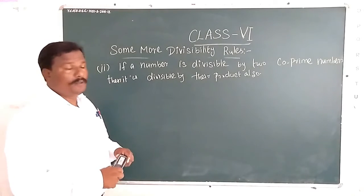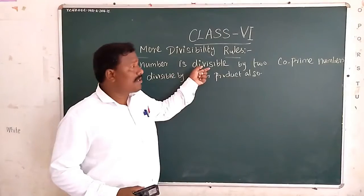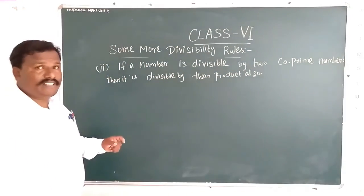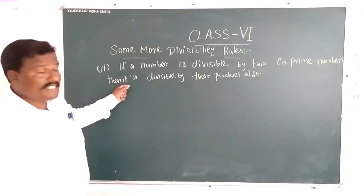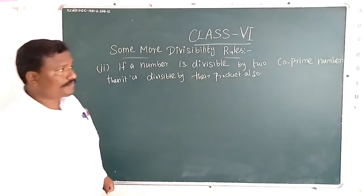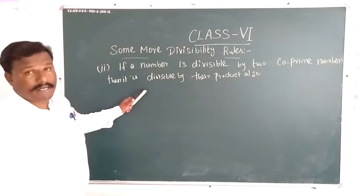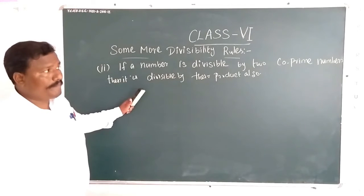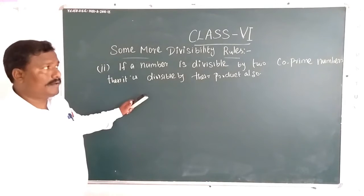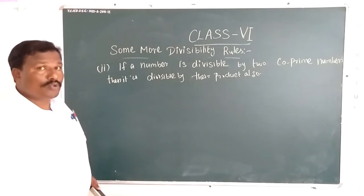The second divisibility rule: if a number is divisible by two co-prime numbers, then it is also divisible by their product. We already discussed co-prime numbers, but to recap — co-prime numbers are numbers that have only 1 as a common factor.